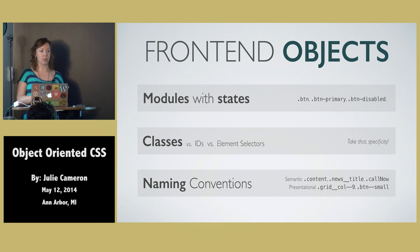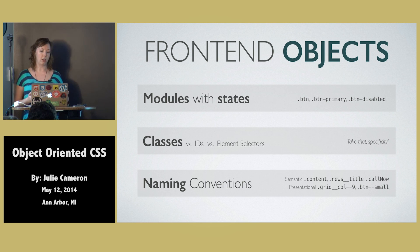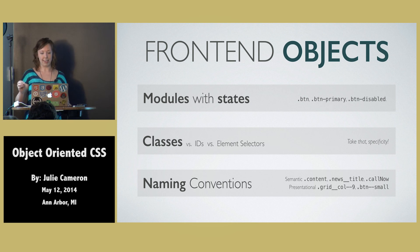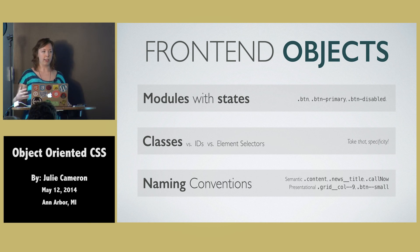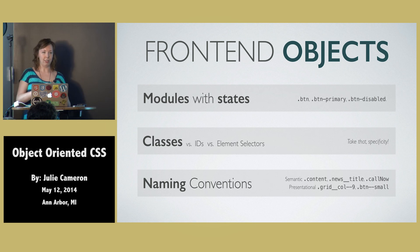The two sides are semantic and presentational. Semantic classes directly describe the content of the object itself — things like 'content', 'news-title', 'call-now'. That's exactly what the thing is. On the other side, there are presentational classes, which are things like 'grid-col-9' — a 9-grid column. 'Button-small' says the button is literally small. That's how it's actually visually represented.